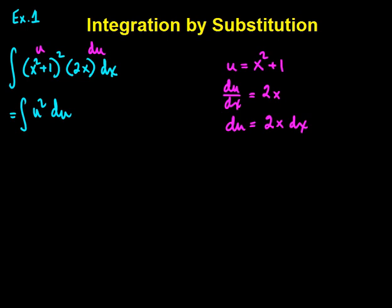That's simply going to be u to the third over 3 plus c. Swapping out u for x squared plus 1, we get x squared plus 1 to the third power over 3 plus c.